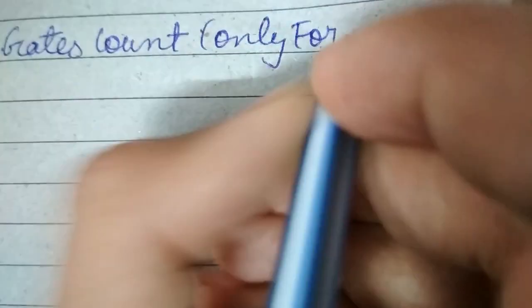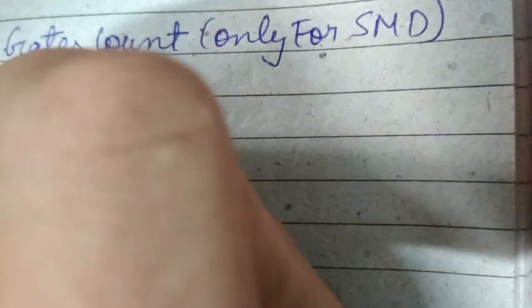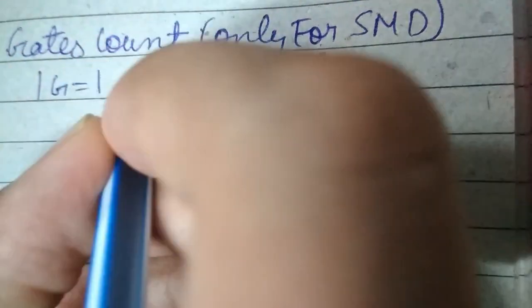Gate count codes are only present on SMD ICs. 1G represents 1 gate, and similarly for other gate counts.